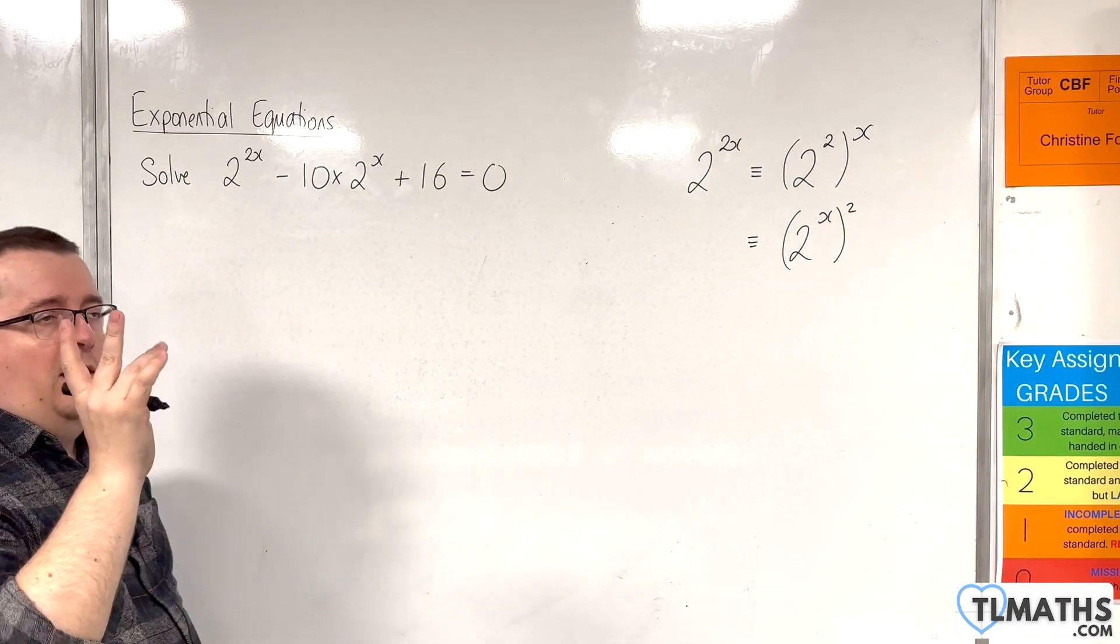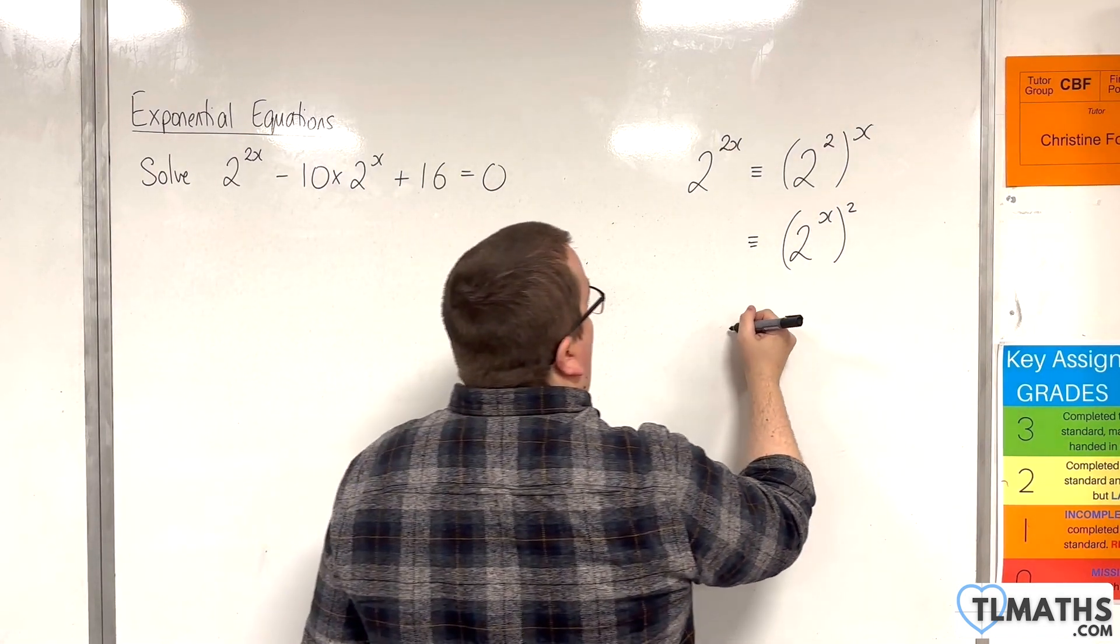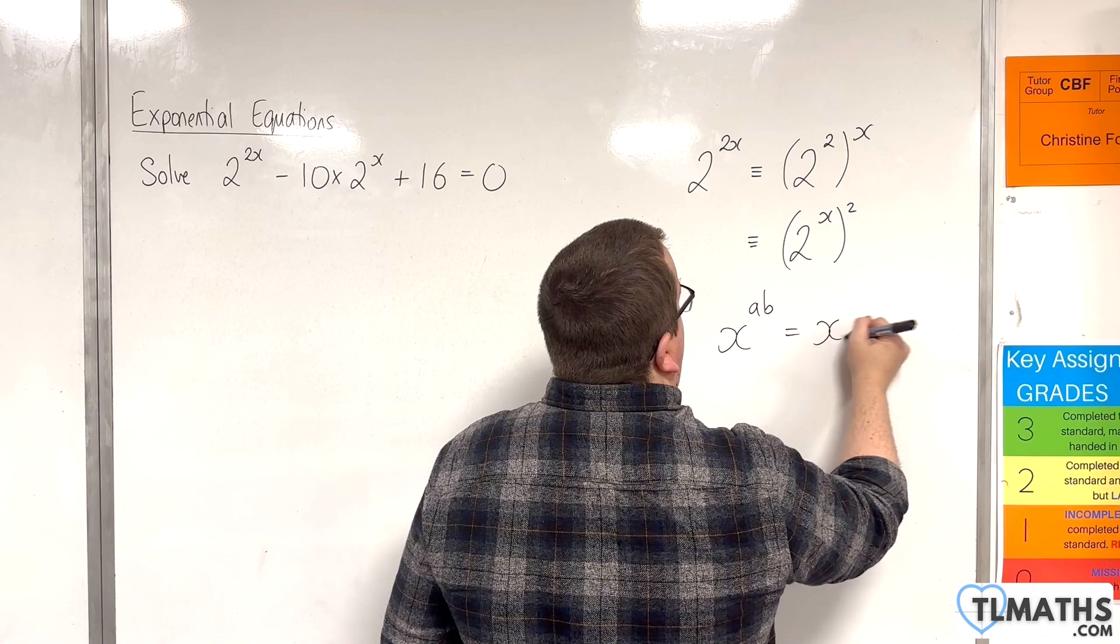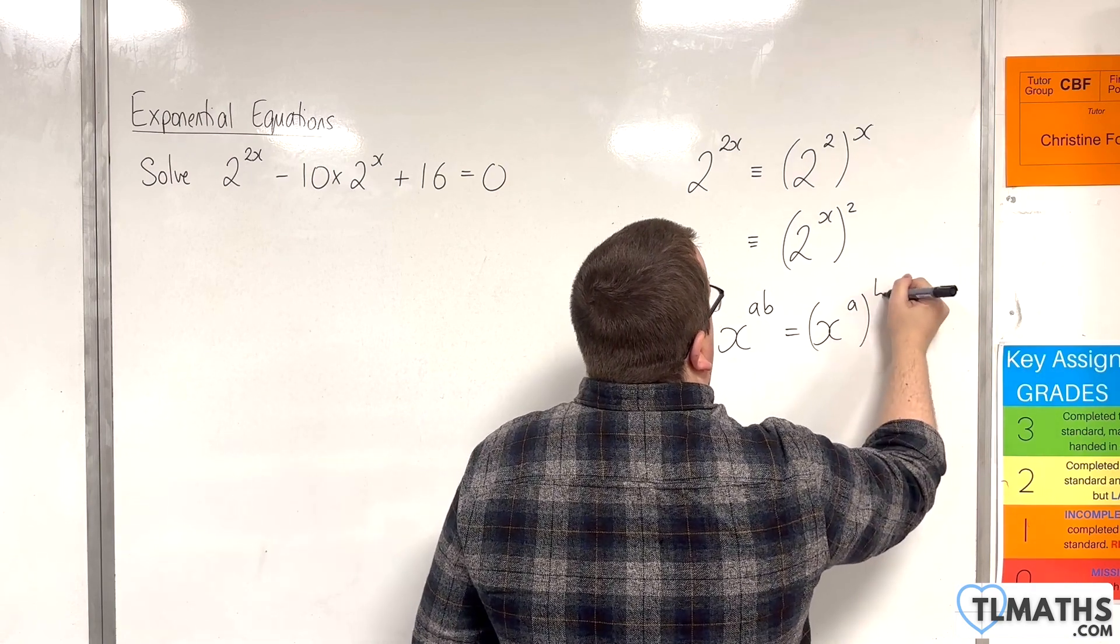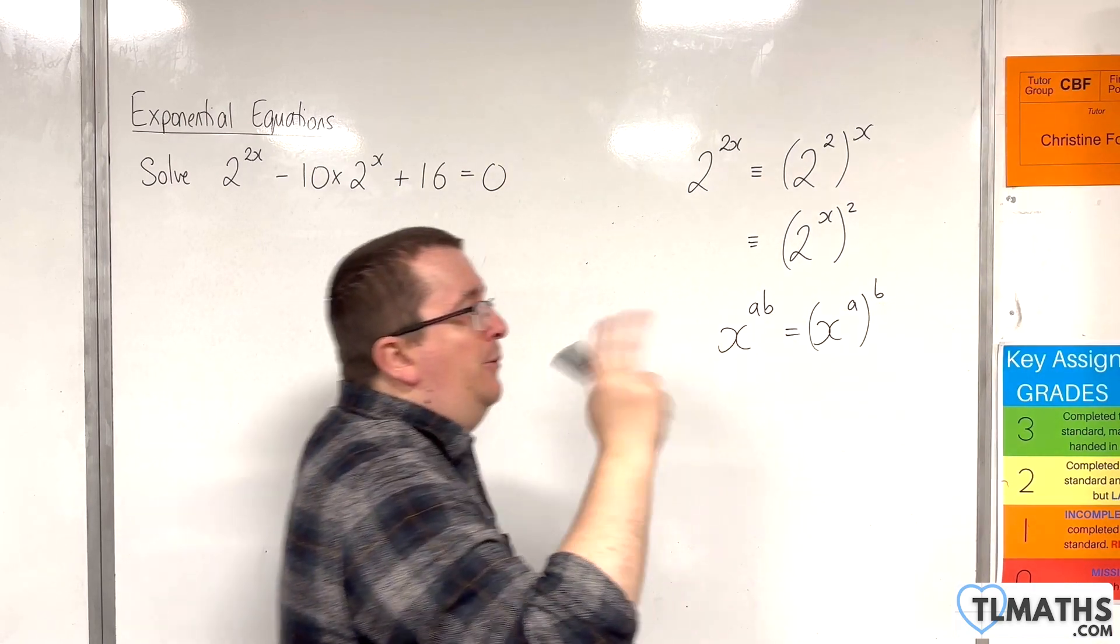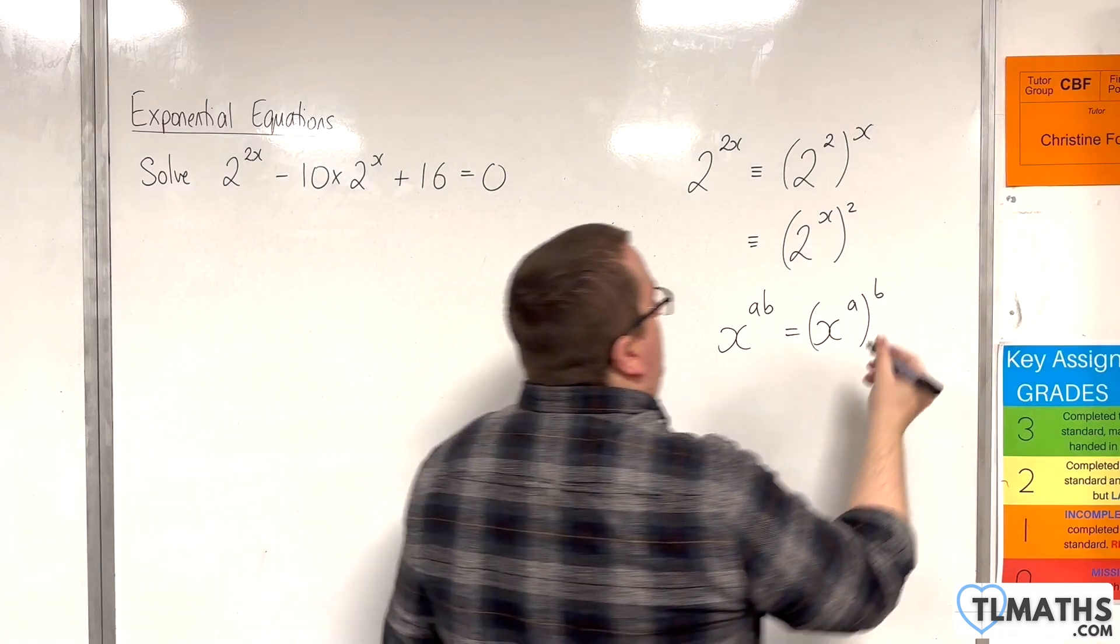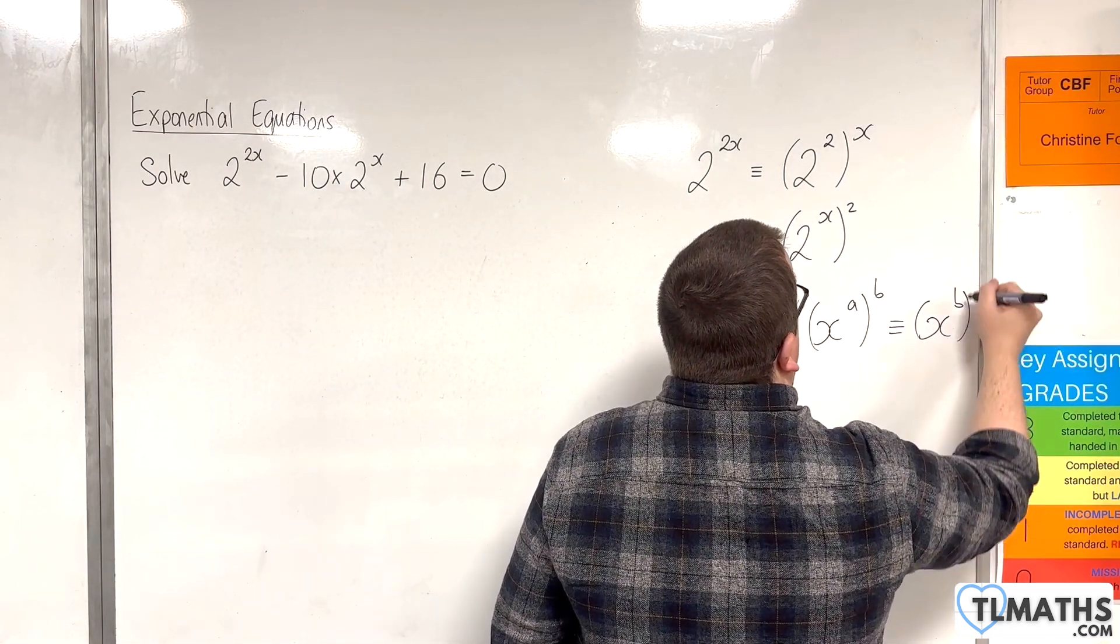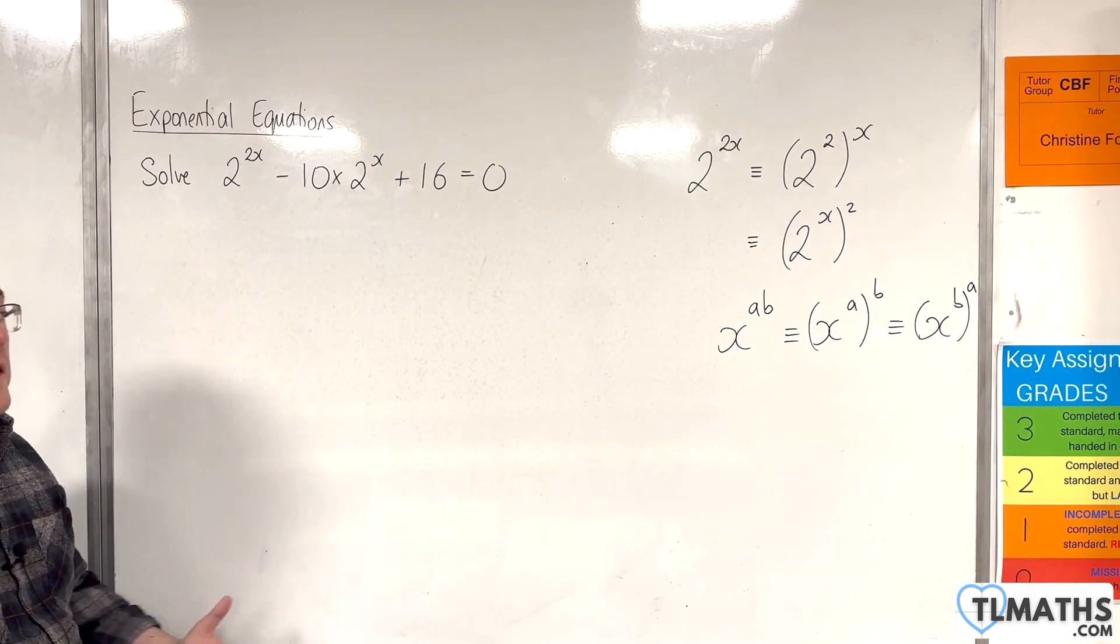Because of our index laws that said that x to the ab was x to the a to the power of b, because a times b is the same as b times a, that is identical to x to the b to the a. So these are the same.